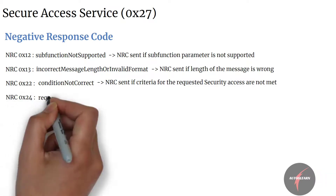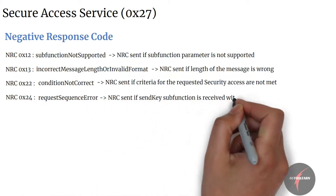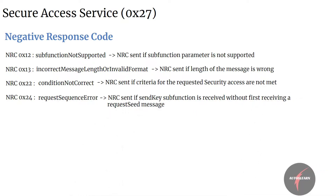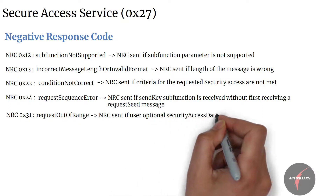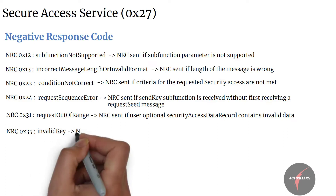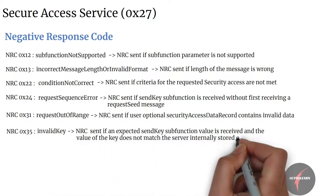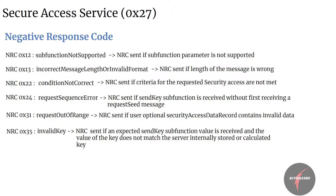NRC 24 — request sequence error — is sent if the send key sub-function is received without first receiving a request seed message. NRC 31 — request out of range — is sent if the user optional security access data record contains invalid data. NRC 35 — invalid key — is sent if the expected send key sub-function value is received but the value of the key does not match the server's internally stored or calculated key.